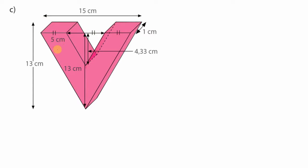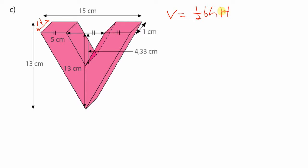For number 4c, we have two triangles — a big triangle and a gap with a small triangle cut out. Again, we are dealing with a triangular prism, so we place the triangle at the bottom with a triangle on top, connected by rectangular faces. The formula is the same: volume equals half base times height of the triangle, then multiplied by the perpendicular height, which is the distance connecting the two triangles.